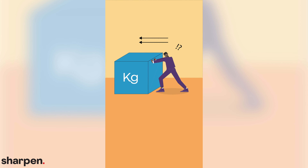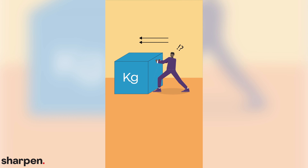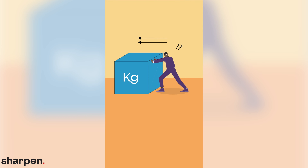And finally, there's inertia. Determined by its mass, inertia is an object's resistance to change in its motion.